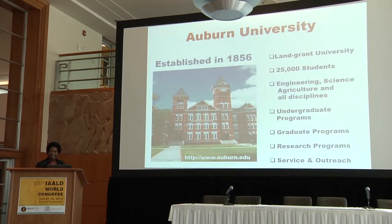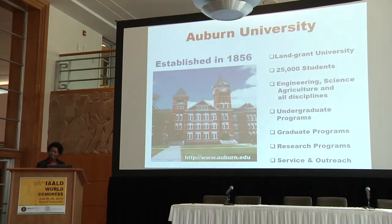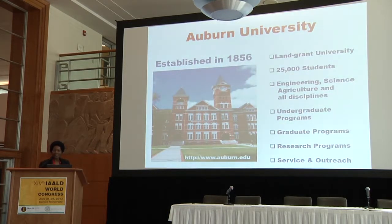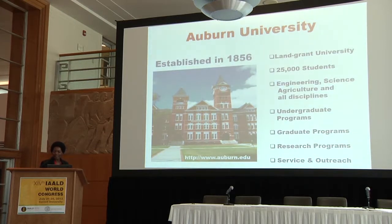Some background information: Auburn is located in the southeastern part of the U.S. near Atlanta, Georgia. It's a land grant university established in 1856, and as a land grant it is a very comprehensive university offering many programs of instruction, research, and engineering. Agriculture and sciences are among some of our strongest programs.